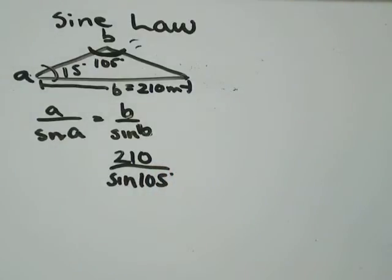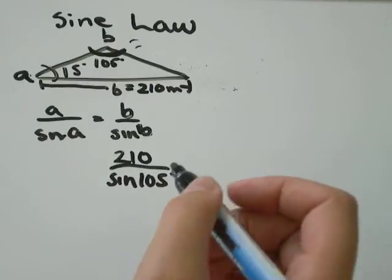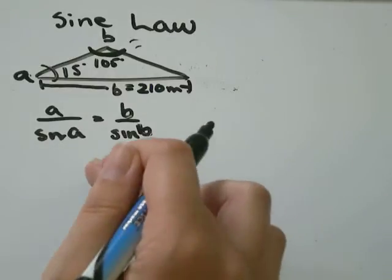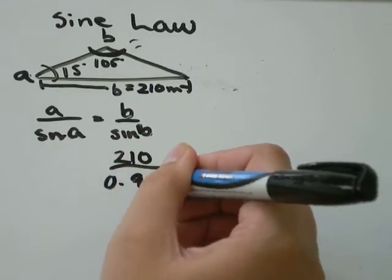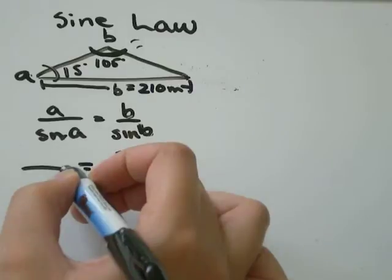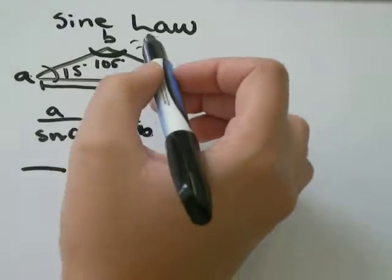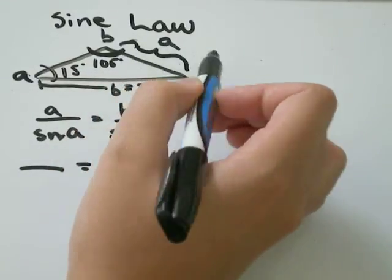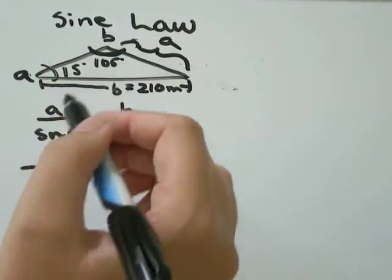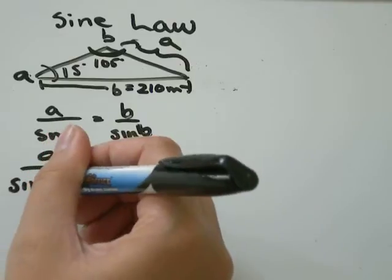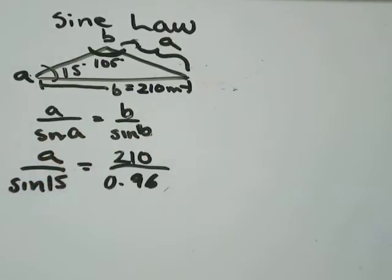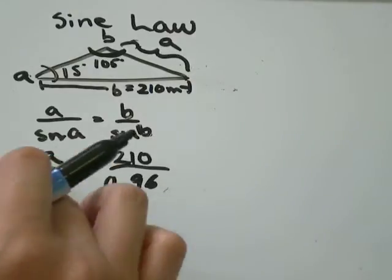I'm just going to go in my calculator — sine of 105 — make sure your calculator is in degree mode, and I get that sine 105 is approximately equal to 0.96. A is our unknown, and angle A is 15 degrees. So sine of 15 — I'll just type that into my calculator — and I get that's equal to about 0.26.